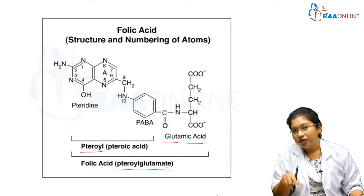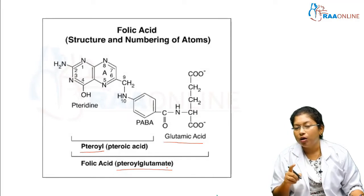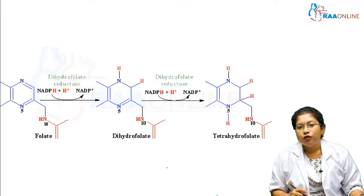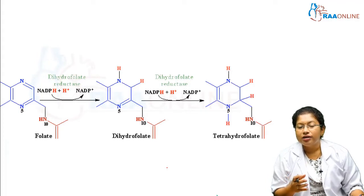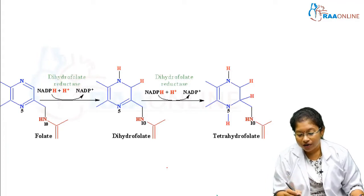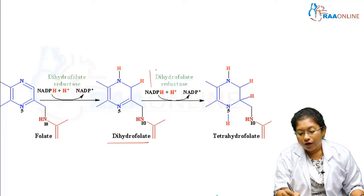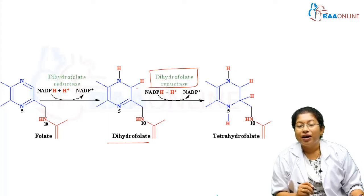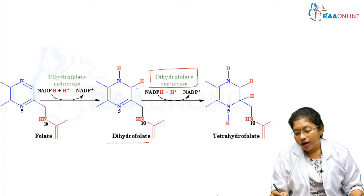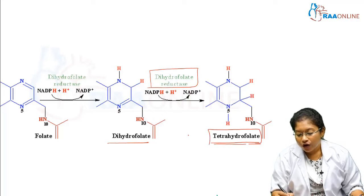But only the activated folic acid is going to carry the one carbon groups. So folate first reduces — it gets the hydrogen group and becomes dihydrofolate. Then, further reduction by dihydrofolate reductase, it will become tetrahydrofolate, we call it as THF.